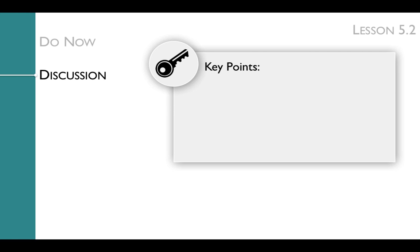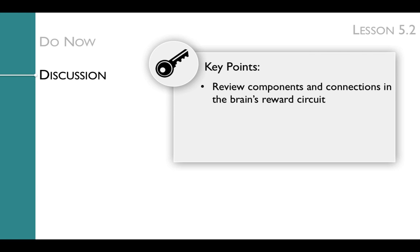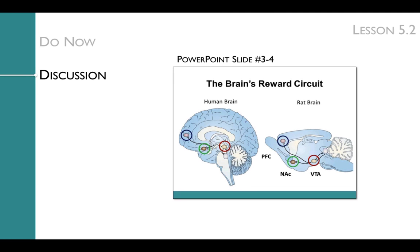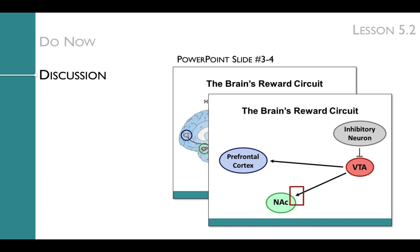The key points of the discussion are to review the components and connections in the brain's reward circuit, as well as to review the process of synaptic transmission. We'll get to these key points with a Socratic discussion. We'll use slide 3 of the lesson PowerPoint to review the brain's reward circuit with your students, and slide 4 to introduce students to a new way of representing that circuit.